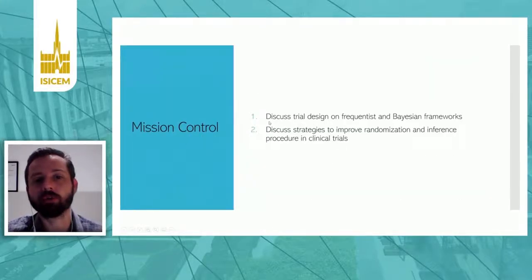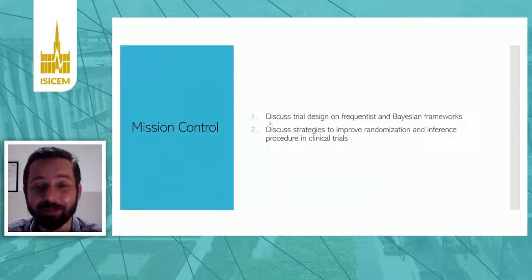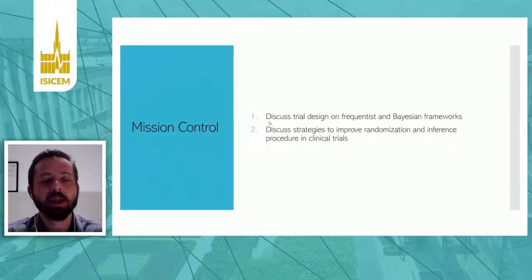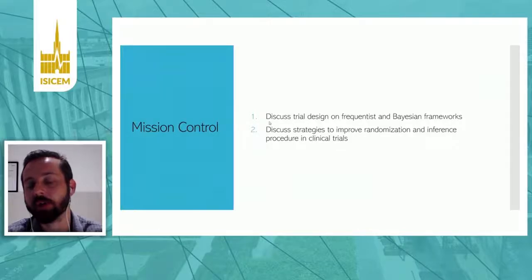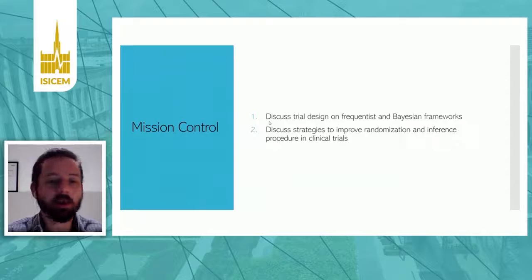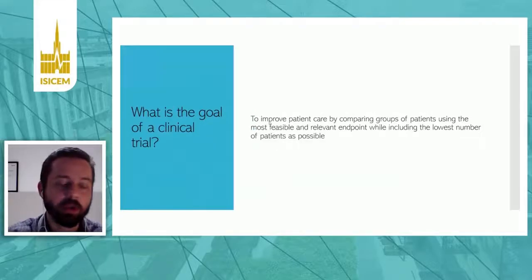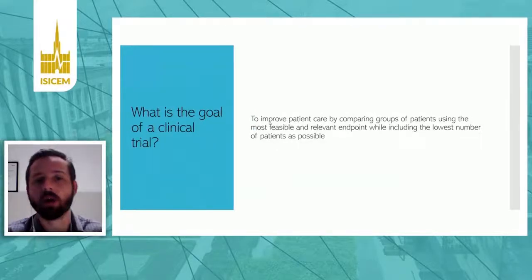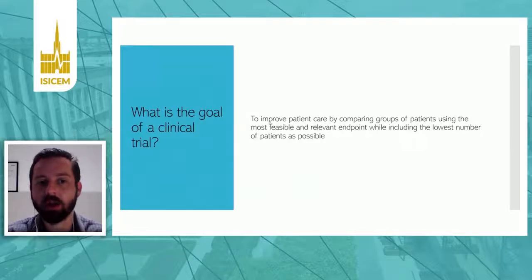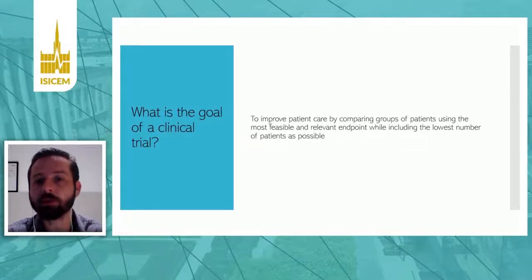My goal here is to discuss trial designs in both frequentist and Bayesian frameworks without being pedantic. We're going to discuss why new methods are popping up — like the REMAP-CAP trial on a course for COVID published a couple of days ago — and how we can improve randomization and inference procedures in clinical trials. The goal of a clinical trial is to improve patient care using the most feasible and relevant endpoints, including the lowest number of patients possible.